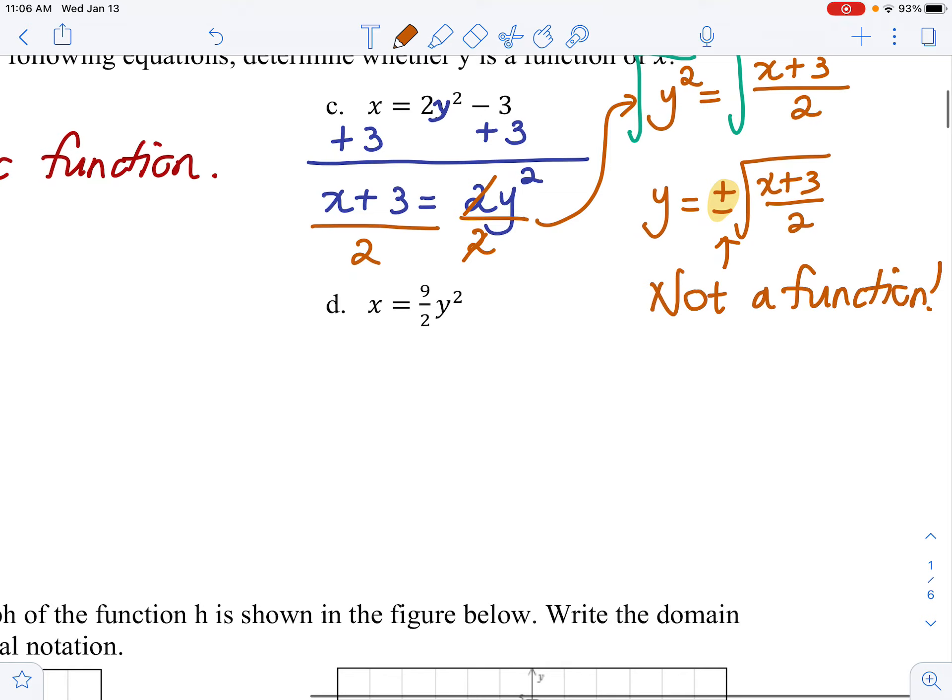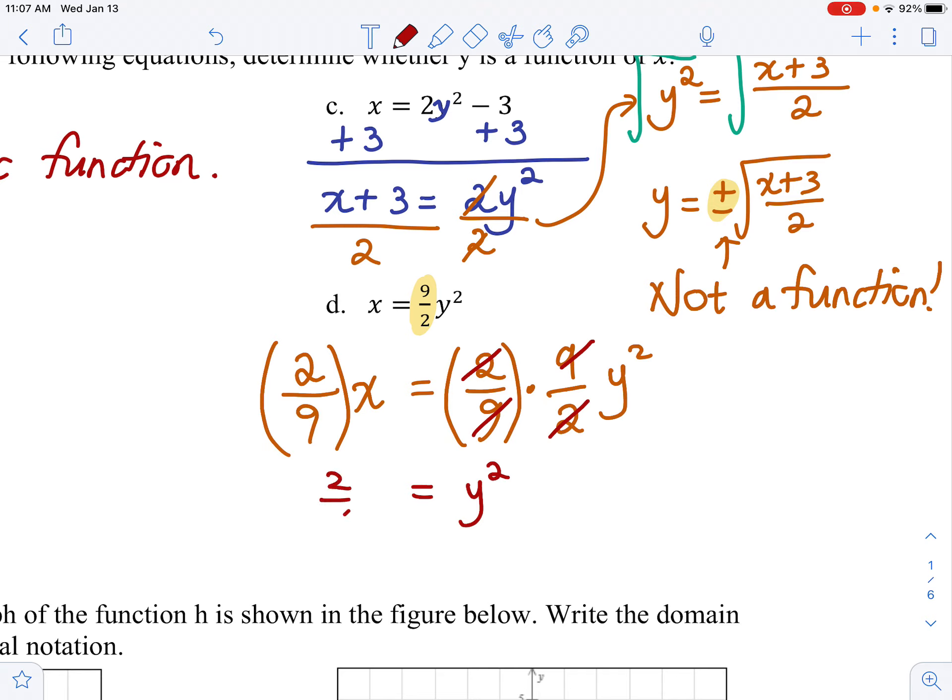Let's look at D. Let me go ahead and solve this for y. How do you get rid of this fraction 9 over 2? We're going to multiply both sides by its reciprocal. Reciprocal of 9 over 2 is you flip that fraction. Multiply both sides by 2 over 9. So I have 2 over 9 times x equals 2 over 9 times 9 over 2 y squared.